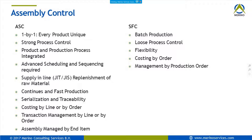Typical characteristics of assembly control include advanced sequencing, minimizing inventory, and supplying inventory to the line just in time and in sequence for the right product. When we look at SFC, I call that more batch production — we produce batches of the same product. It's a looser process control; we have a routing, but it's not really mandatory. I've seen people producing with SFC with only two routing operations: start production and end production.